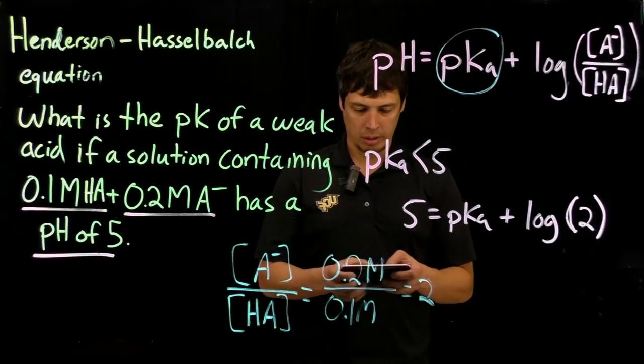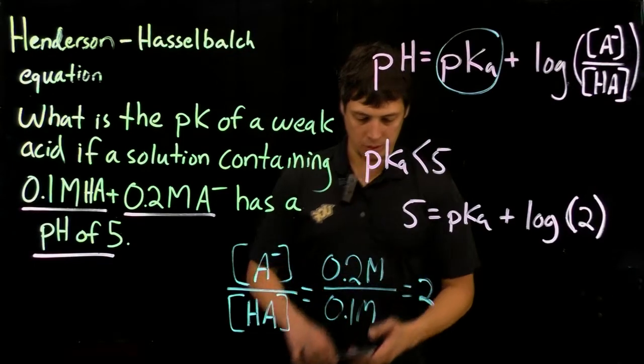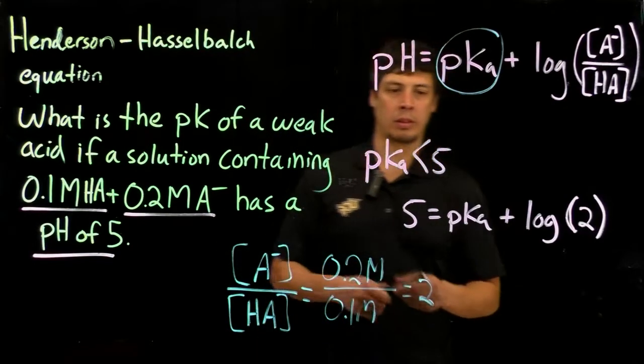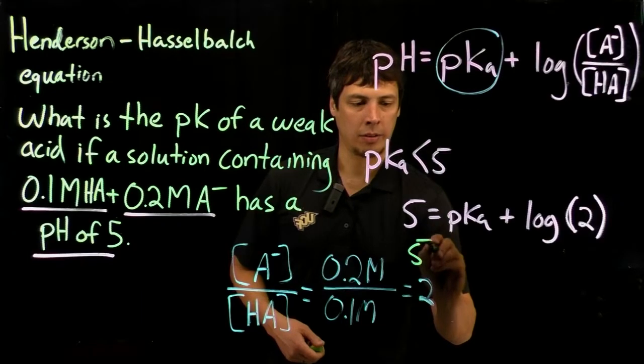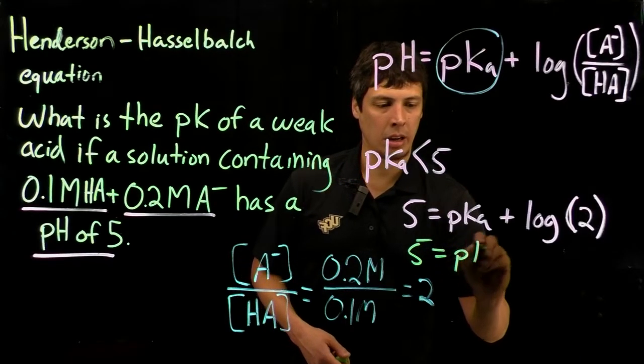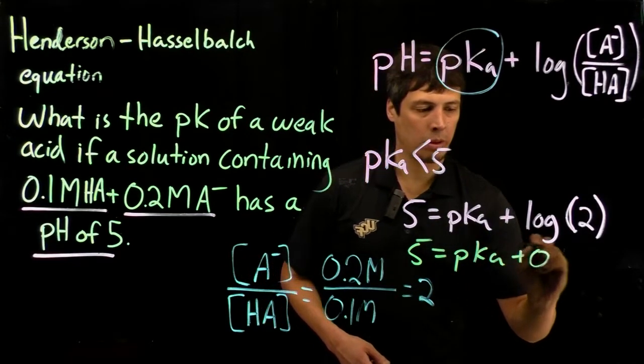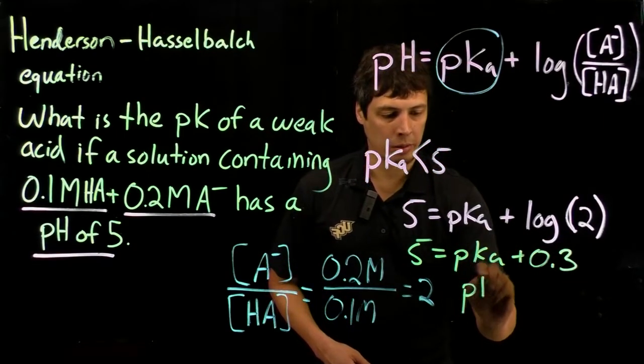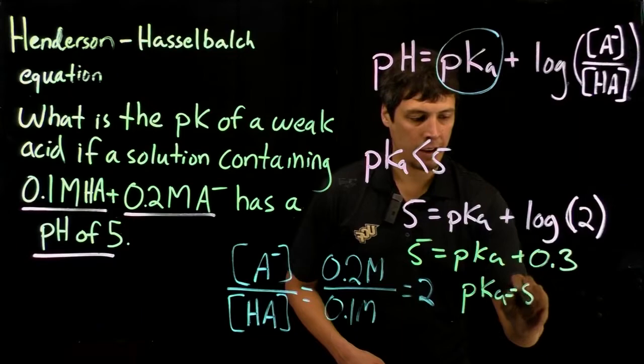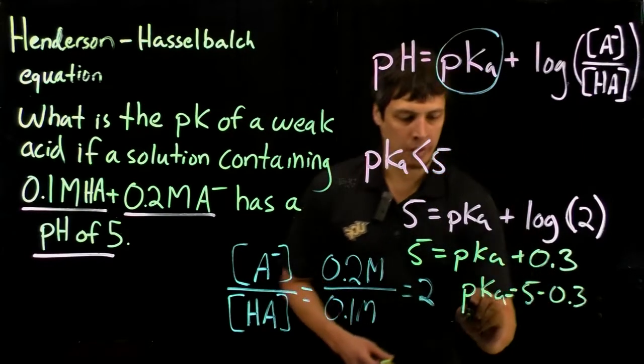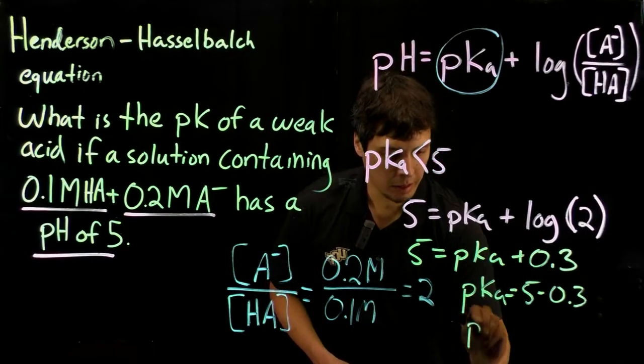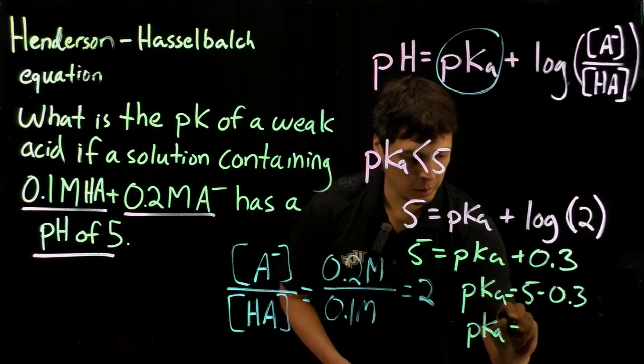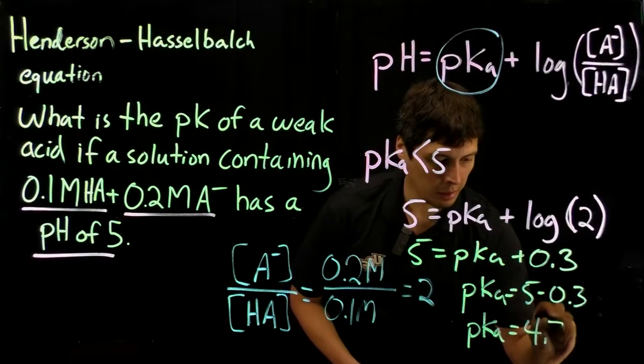So the log of 2, 0.3. 5 equals pKa plus 0.3, okay? And pKa then equals 5 minus 0.3, and pKa therefore equals 4.7.